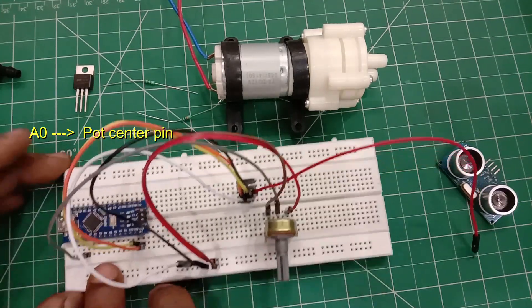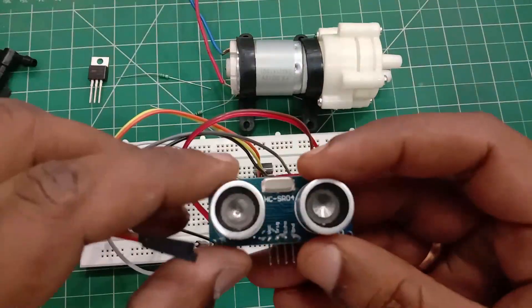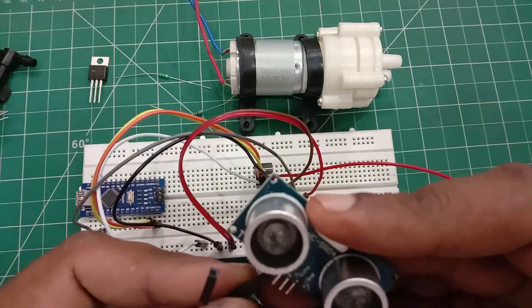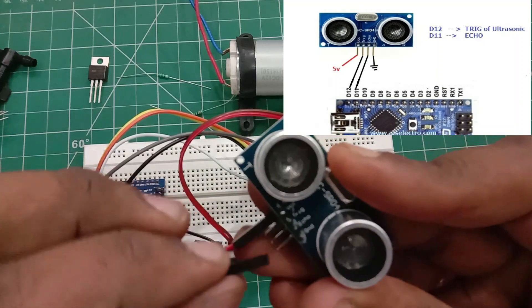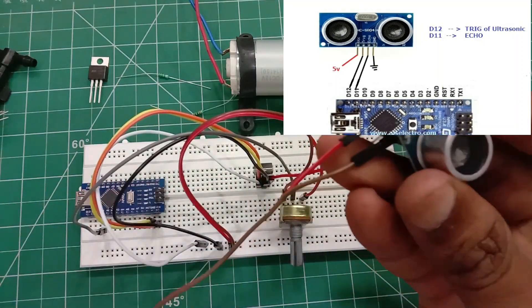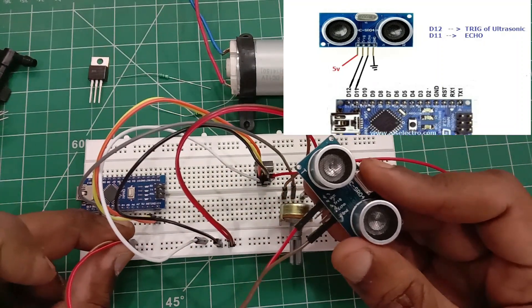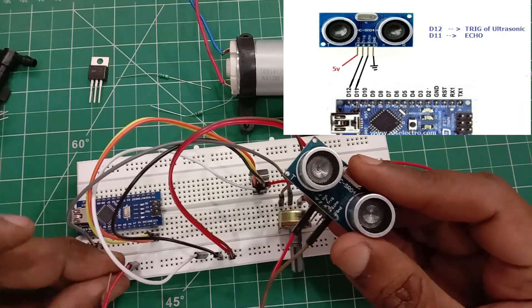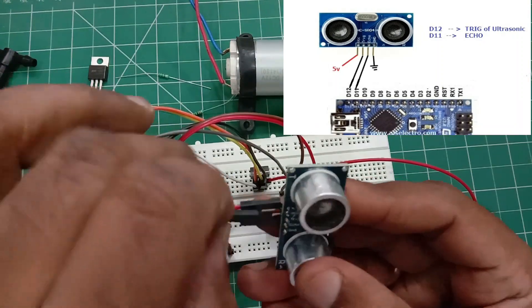The ultrasonic connections: the ultrasonic has got four pins. VCC is connected to 5 volt, ground is connected to ground, and the trigger pin goes to D12 of Arduino Nano, echo pin goes to D11 of Arduino Nano.